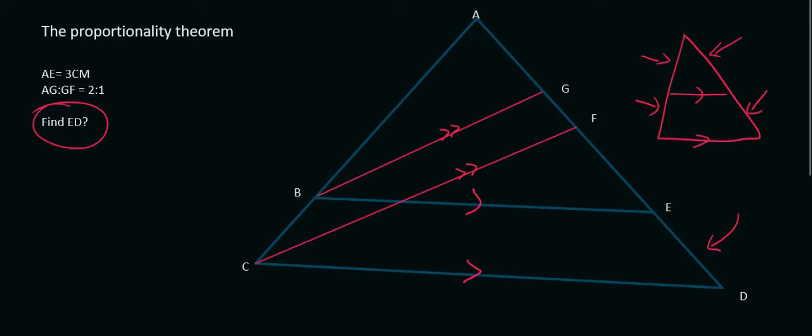We know from the question statement that AE is equal to 3 cm, so let's quickly fill that in. So AE is 3 cm and AG to GF is 2 to 1. So AG is going to be two parts, I'm going to say 2X, and then GF is 1X. Notice because it's a ratio I have to say X. And if the question gave me a different ratio somewhere else, I would use a different letter, like 3Y and 4Y for example.